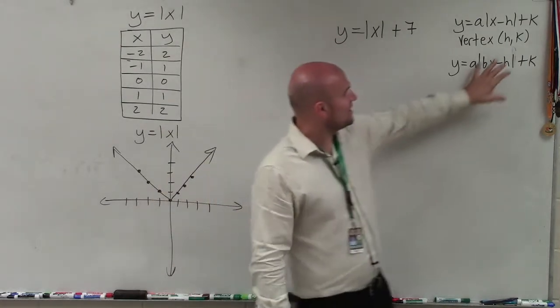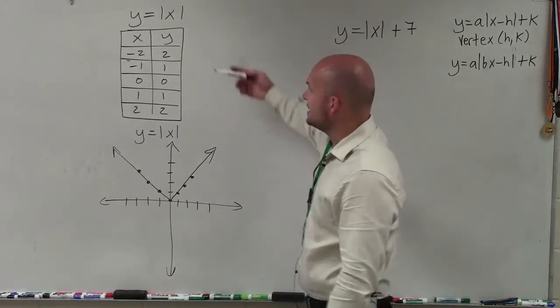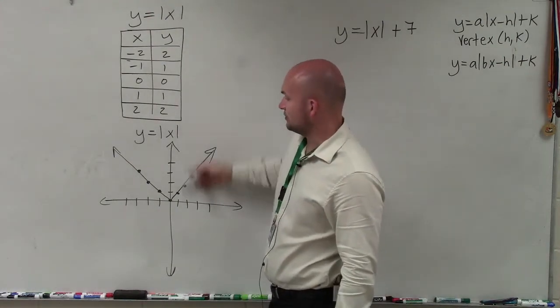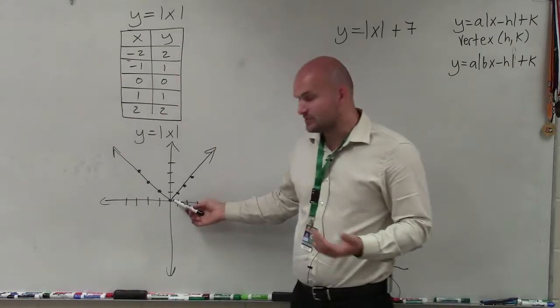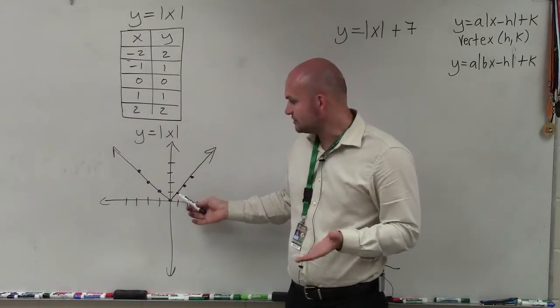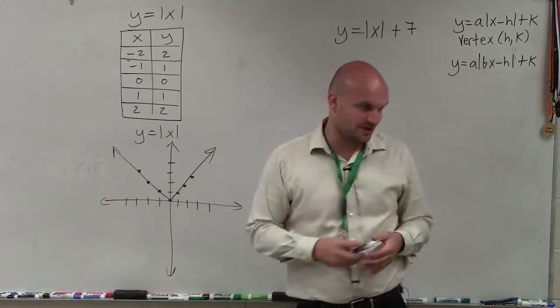What I have over here is a couple of things: the transformation equations where we can identify what the transformation is, as well as what the parent graph looks like and the table for the parent graph. You can see that the vertex is where the graph changes directions, and by the table of values, it's symmetric about the y-axis.